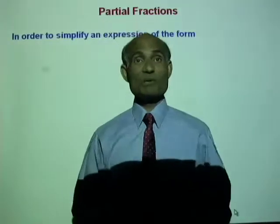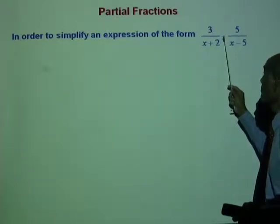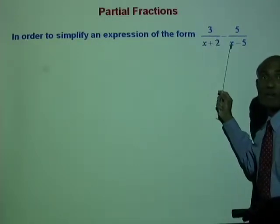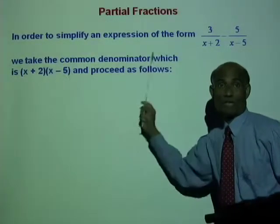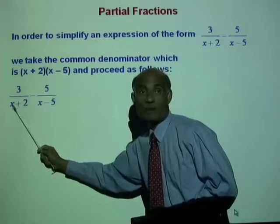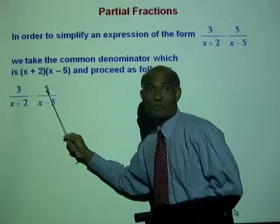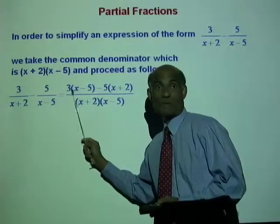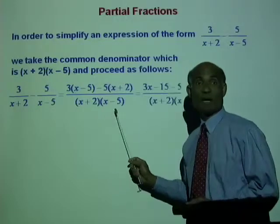Let me start with a simpler expression. How do you simplify an expression of the form 3 divided by x plus 2 minus 5 over x minus 5? The method is taking the common denominator and simplify. The common denominator here is x plus 2 times x minus 5. That means 3 will get multiplied by x minus 5 and minus 5 will get multiplied by x plus 2 on the numerator, giving you 3 times x minus 5 minus 5 times x plus 2, all over x plus 2 times x minus 5.